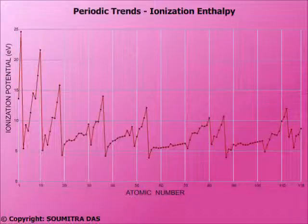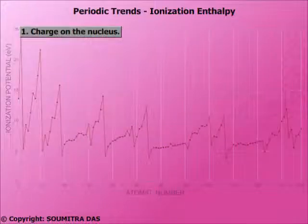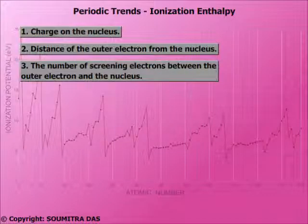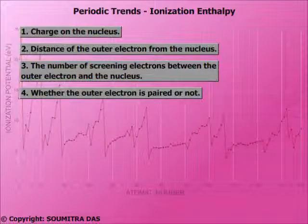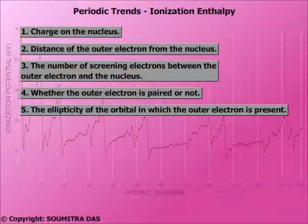The value of the first ionization enthalpy depends on the following factors: charge on the nucleus, distance of the outer electron from the nucleus, the number of screening electrons between the outer electron and the nucleus, whether the outer electron is paired or not, and the ellipticity of the orbital in which the outer electron is present.